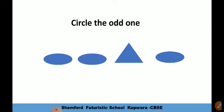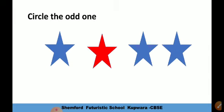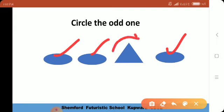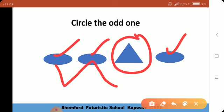Circle the odd one out۔ آپ لوگوں کو same and different سکھایا، اب آپ کو odd one circle کرنا ہے۔ Odd one ہم کس کو بولتے ہیں؟ اگر چار چیزیں ہوں اور تین ایک جیسی ہوں اور ایک الگ — three will be same and one will be different۔ یہاں this is an oval، this is an oval، this is also an oval — so which one is odd? Triangle is the odd one here۔ یہ یہ اور یہ تینوں oval ہیں اور یہ triangle ہے، that's why it is the odd one — اس کو circle کریں گے۔